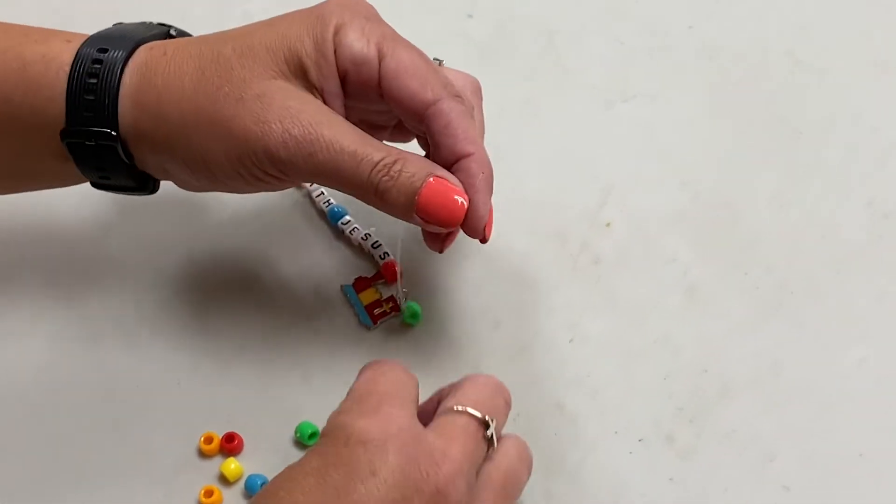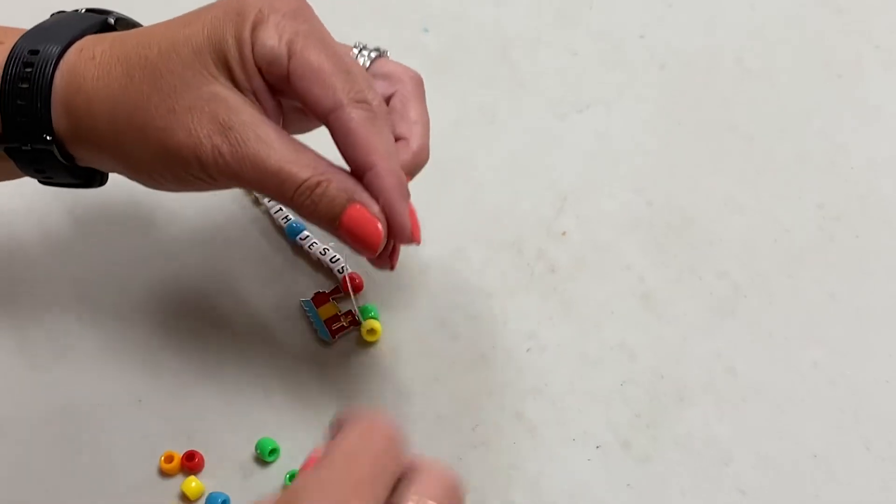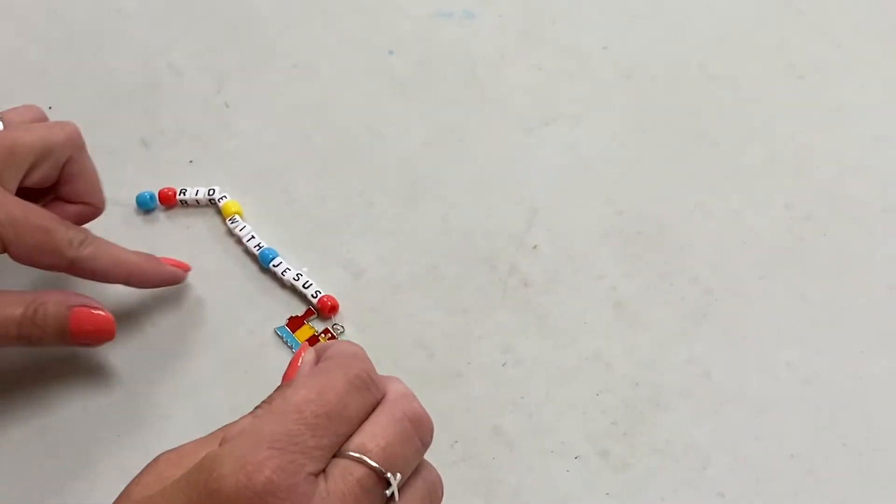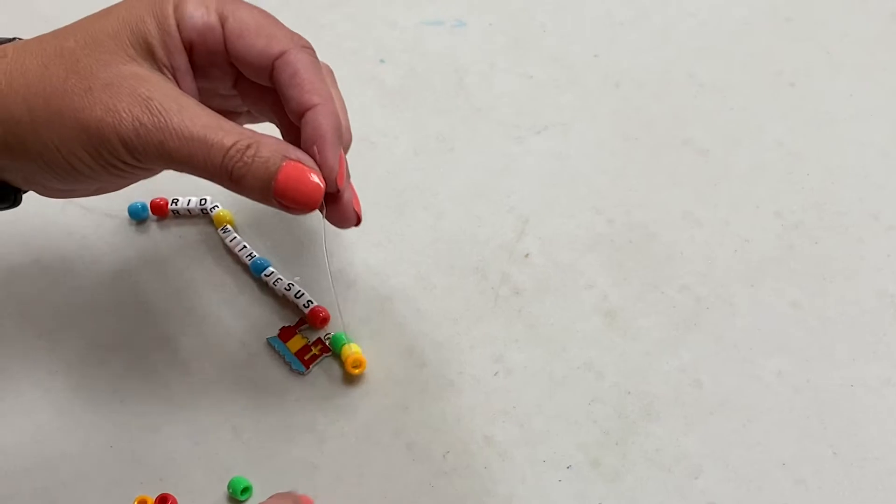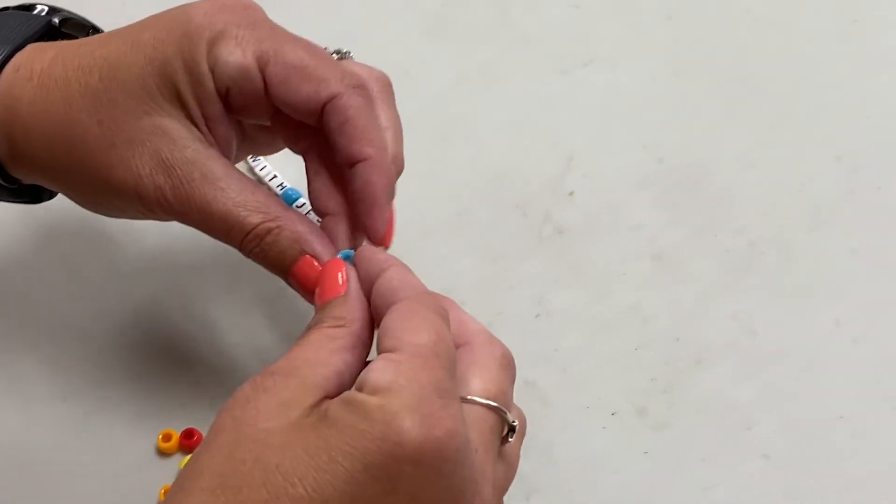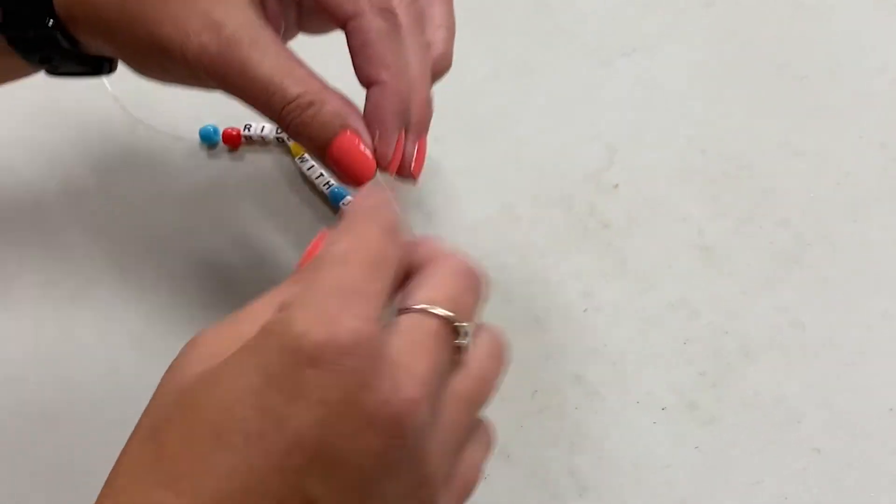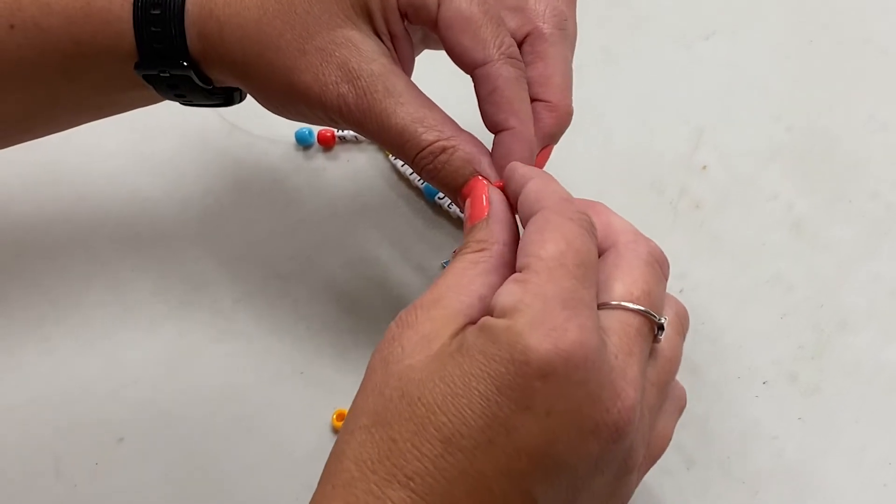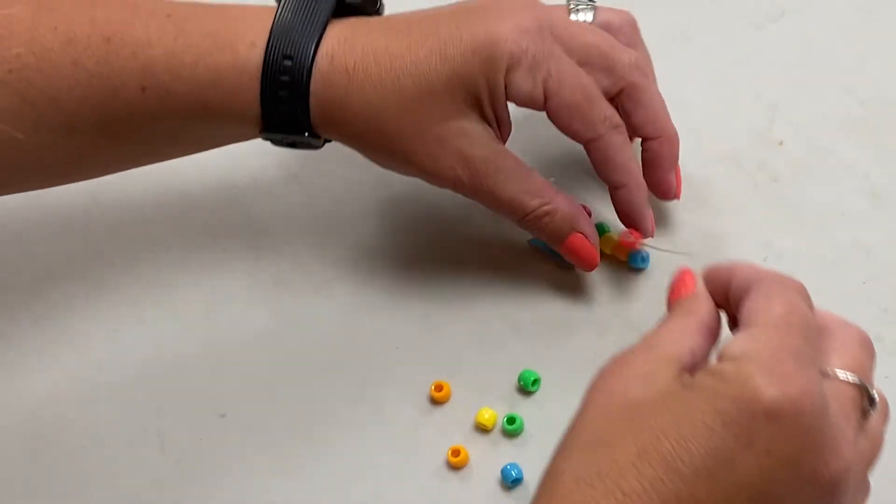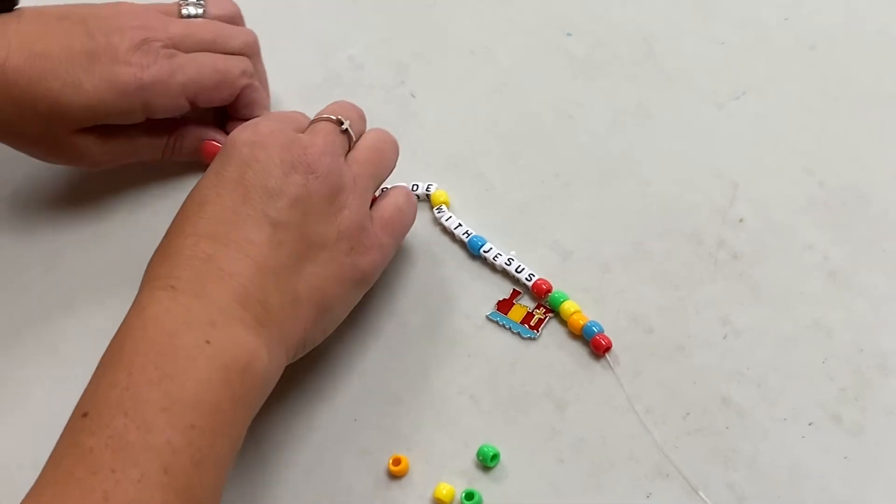Now this is the one where you want to just hold it up and just let them stack on there. If you let this rest on the table, it won't fall off the back. All right, that's good for that side. Let's go back to this side.